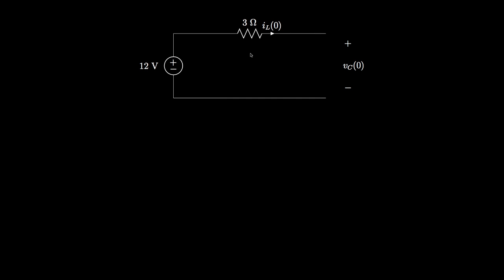The first thing we'll do for this circuit is determine the initial conditions, and to do this we examine the circuit before the switch is moved. Because the circuit is driven by a DC source, we replace the capacitor with an open and we replace the inductor with a short.